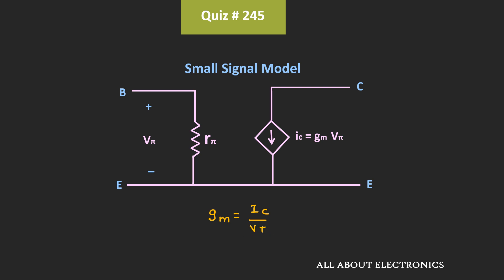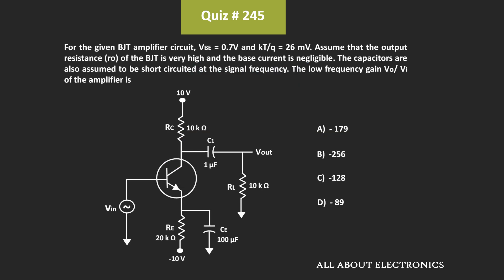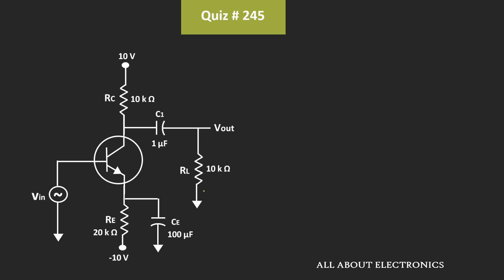Here, we have been already given the value of the thermal voltage — that is, KT/Q is equal to 26 mV. But we need to find the value of the collector current. So to find the collector current, first of all we need to do the DC analysis. For the DC analysis, all these capacitors will act as an open circuit, and all the AC signals can be assumed as zero.